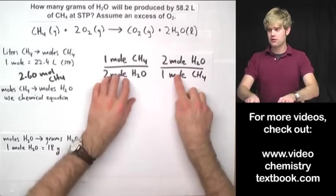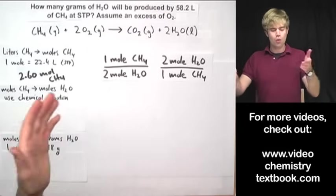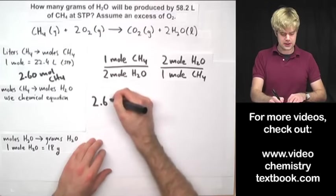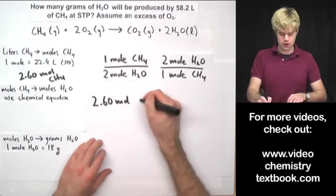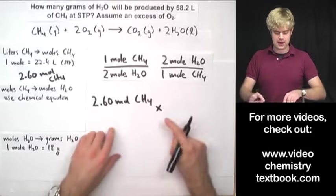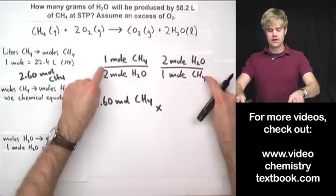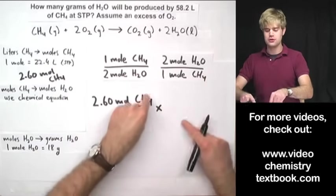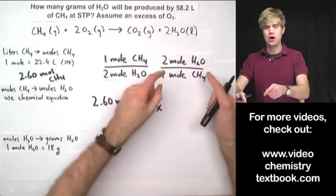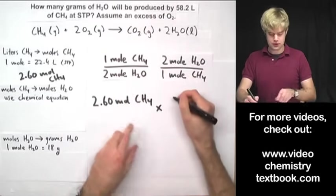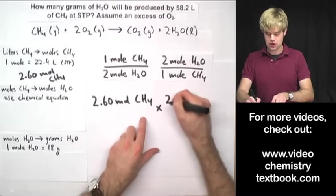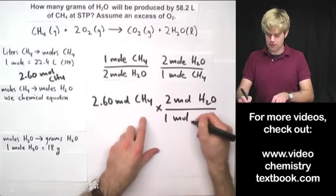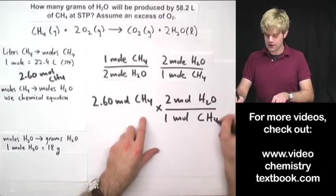Here are the two possible conversion factors that I can use. Which one do I want to use? Well, I have to start with my moles of CH4, 2.60 moles of CH4 times which one of these do I want to use? I want to use the one with CH4 on the bottom so that it will cancel out those units and it will leave me with units of moles of water. So I'm going to do this times 2 moles of H2O divided by 1 mole of CH4.